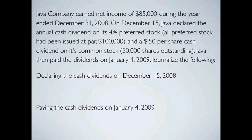Journalize the declaring of the cash dividends on December 15th, 2008. Remember, on the declaration date a liability is created, so you have to make an entry to dividends payable. Payables are liabilities and they go up with a credit, so we're going to credit dividends payable for the amount. But what is our debit? Remember, dividends is not an expense — it reduces retained earnings. So we're going to debit retained earnings and credit dividends payable.